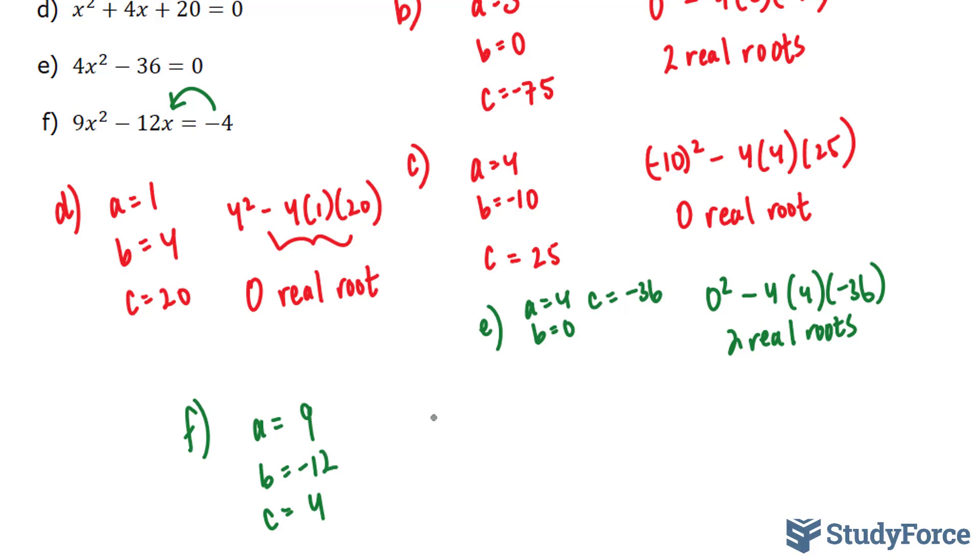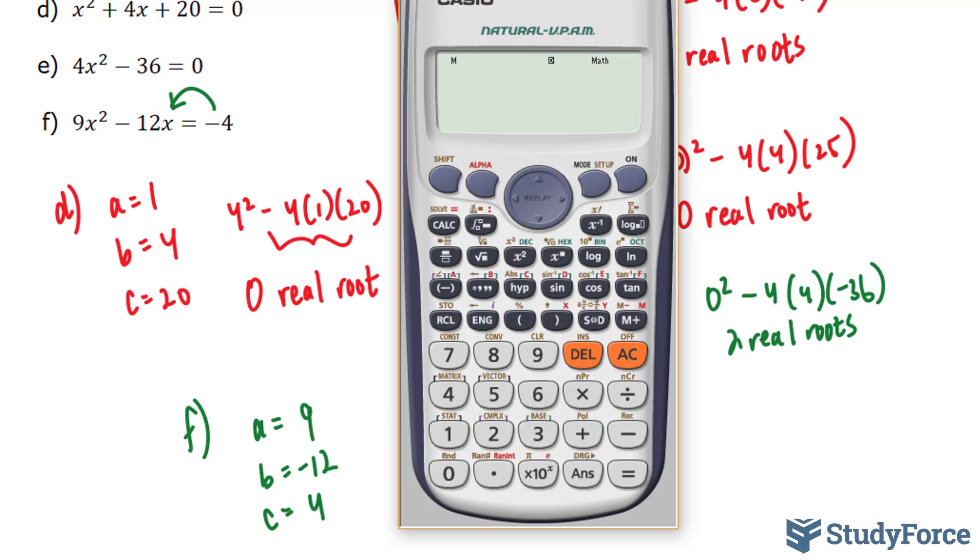So the formula is b to the power of 2. So negative 12 to the power of 2 minus 4 times 9, that's 36, times 4. Now this will be a close one, so I'm going to use my calculator.